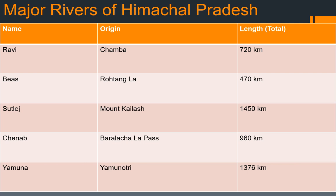Now let's look at the major rivers of Himachal Pradesh. First is Ravi, originating from Chamba. Beas, originating from Rohtang. Sutlej, originating from Mount Kailash. Chenab, originating from Baralacha Pass. And Yamuna, originating from Yamunotri. Of these rivers, Ravi, Beas, Sutlej, and Chenab are also part of the Indus Water Treaty, under which India got complete freedom to use water from Ravi, Beas, and Sutlej.